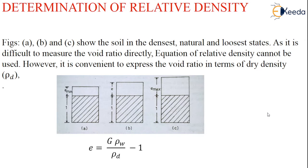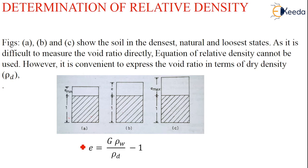These three figures show the soil in the densest, natural, and loosest states. It is very difficult to measure the void ratio directly, so the direct equation for relative density is not commonly used. It is more convenient to express the void ratio in terms of dry density, using the relation E = (G × ρW / ρD) − 1.